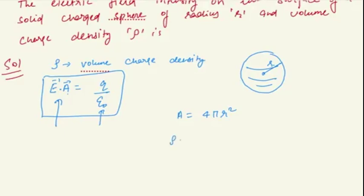Now what is rho? Rho is equal to Q divided by volume of the sphere. What is the volume of the sphere? 4 by 3 pi r cubed.